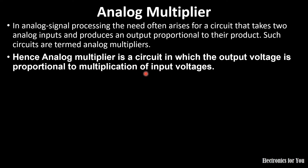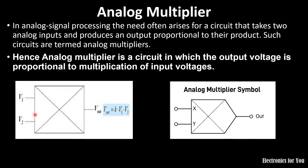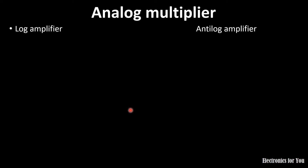This is the symbol for the analog multiplier, where V1 and V2 are the input voltages and the output voltage equation is Vout = k·V1·V2, where k is the scaling factor. This is another symbol for the analog multiplier, with two inputs and one output.